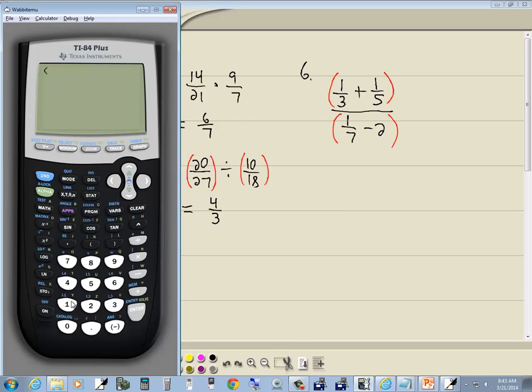So I do a beginning parenthesis, 1 divided by 3 plus 1 divided by 5, closing parenthesis, divided by beginning parenthesis, 1 divided by 7 minus 2, closing parenthesis, and then enter. Now we get decimals. Change decimal to fraction, we do math, enter, enter, and our answer is negative 56 over 195.